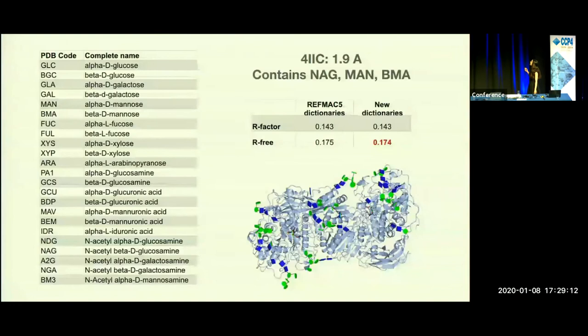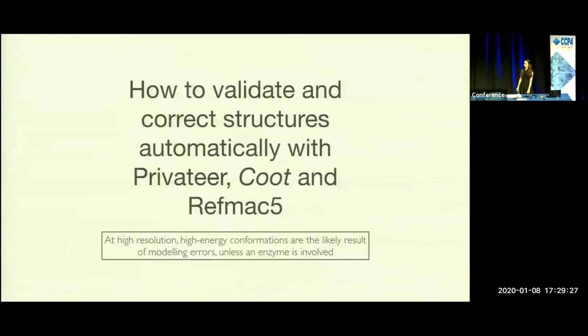These are the dictionaries we have generated so far. This is a structure refined with the new dictionaries and there is a slight improvement if you compare it to the current REFMAC dictionaries and the new ones that I generated. Now I'm going to show you how to correct structures automatically with Privateer, COOT, and REFMAC. First, I'm going to show you a high resolution structure where conformations are likely the result of modeling errors unless an enzyme is involved.